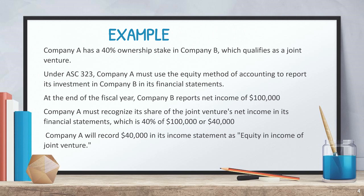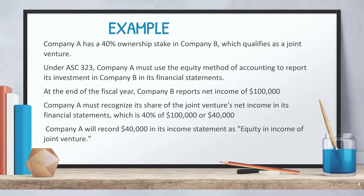At the end of the fiscal year, Company B reports net income of $100,000. Company A must recognize its share of the joint venture's net income in its financial statements, which is 40% of $100,000, or $40,000. Company A will record $40,000 in its income statement as equity in income of joint venture.